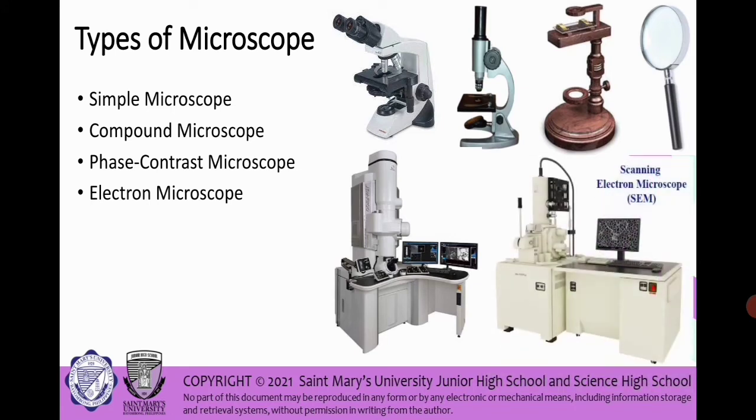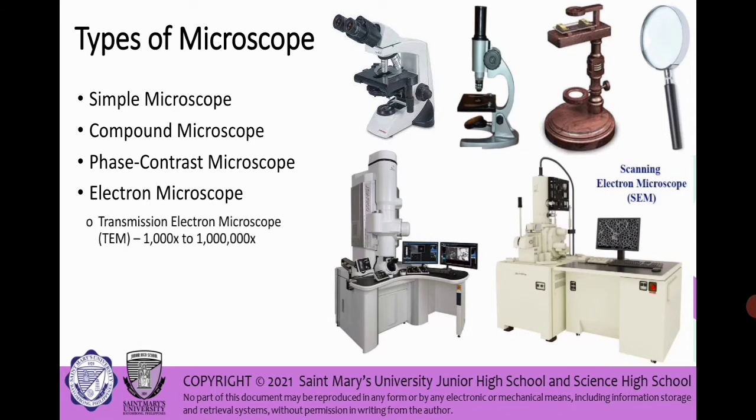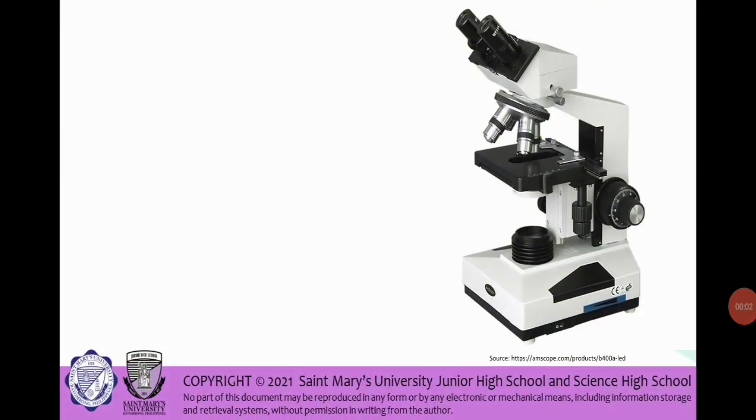And the last one we have the electron microscope. This is an example of electron microscope for the transmission electron microscope, and we have also another type: scanning electron microscope. For transmission electron microscope, it magnifies the specimen 1,000 times to 1,000,000 times, and for scanning electron microscope it magnifies the specimen up to 500,000 times.